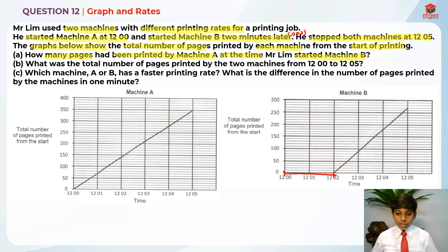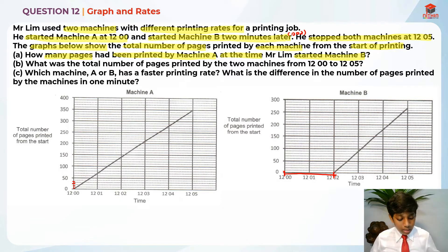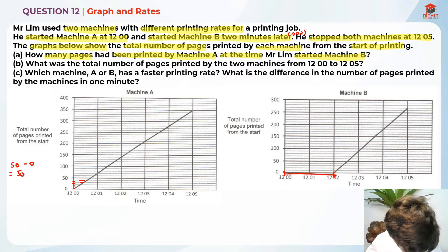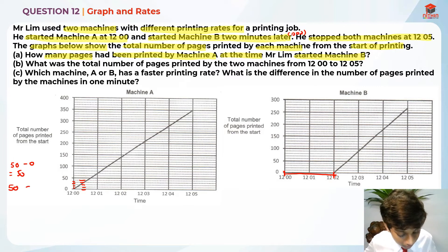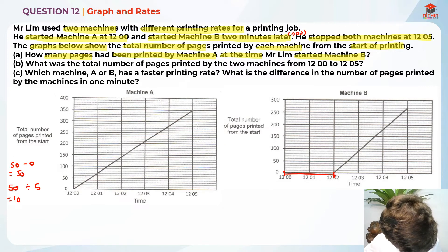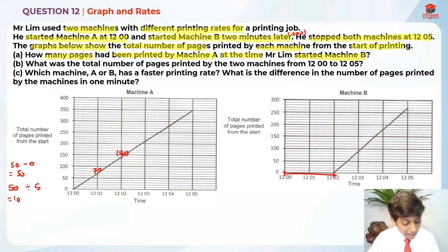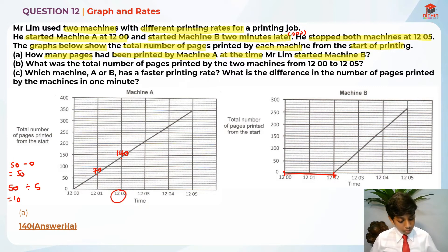So first we need to find the value of each line on the graph. There are four lines, so let's find the difference: 50 minus 0 is 50. Then look at the number of gaps — there are five gaps. So 50 divided by 5 gives us 10; each line represents 10 pages. For 12.01, it's two lines above 50, so it's 70. For 12.02, it's one line below 150, so it's 140. So for Part A, the answer is 140 pages, because that is the value at 12.02.